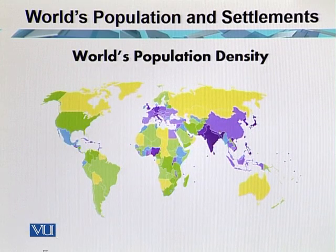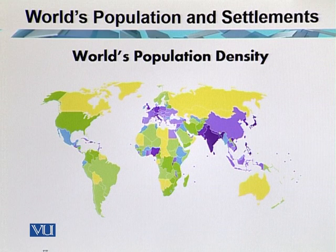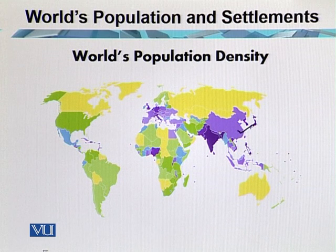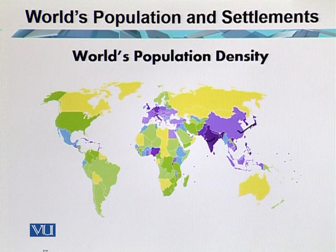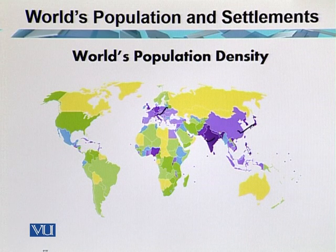This world map shows human population density, controlled by areas under human clusters. The areas with higher density are countries in major clusters: in East Asia — Japan, South Korea, North Korea, and China; in South Asia — India, Pakistan, and Bangladesh fall under high-density zones. In Europe as well, certain countries are under high densities.